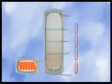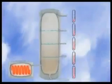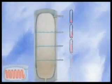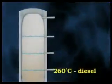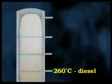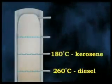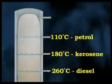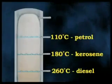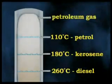The higher the gas rises in the tower, the lower the temperature becomes. The precise details differ at every refinery depending on the type of crude oil being distilled. But at around 260 degrees, diesel condenses out of the gas. At around 180 degrees, kerosene condenses out. Petrol or gasoline condenses out at around 110 degrees, while petroleum gas is drawn off at the top.